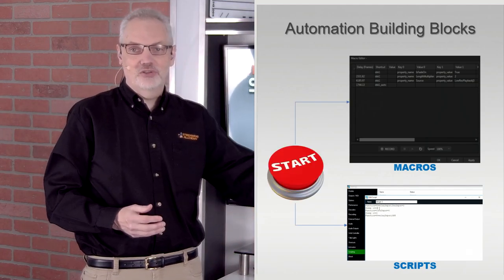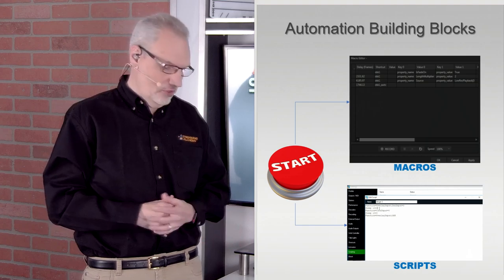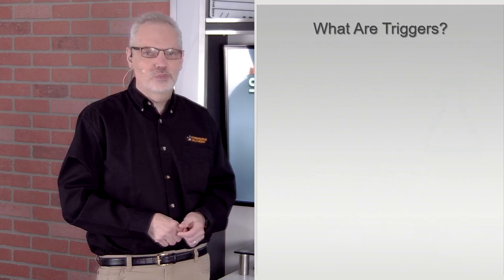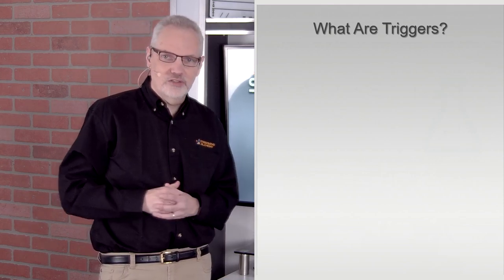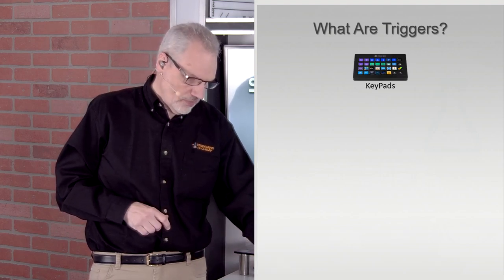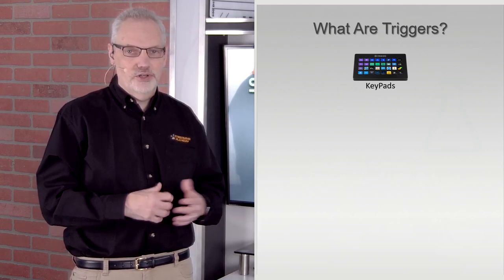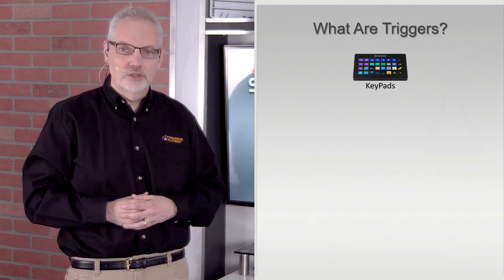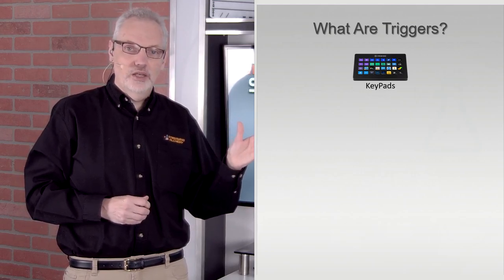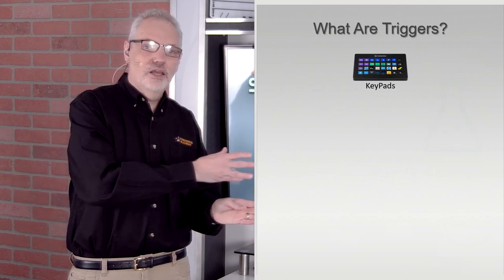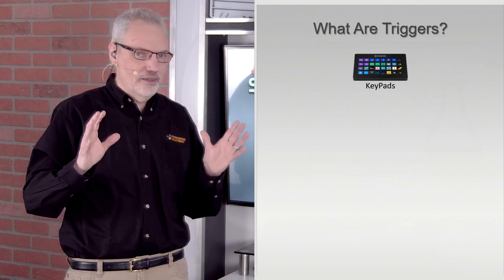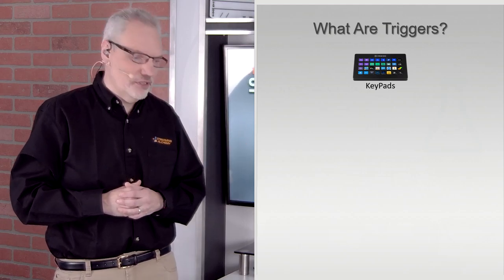How do you actually execute a macro or run a script? These are called triggers — sometimes called shortcuts — but triggers tends to be a universally understood concept in automation. The common ones most people think about are keypads, X-Keys, or things like the Stream Deck that we looked at last week. You can assign a key to a specific macro or script, but that isn't the only type of trigger that exists.